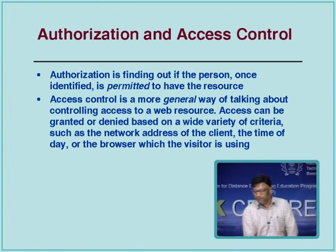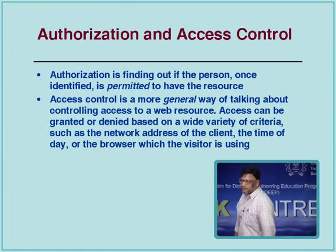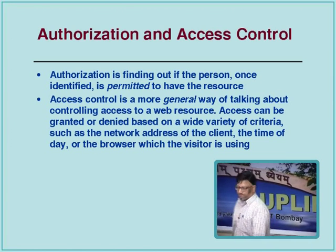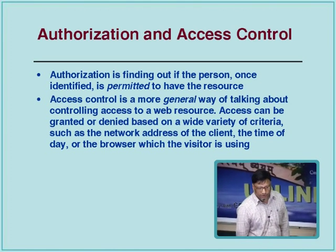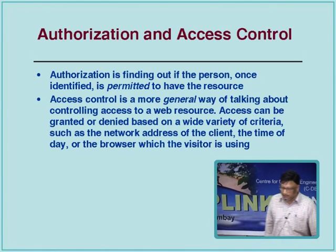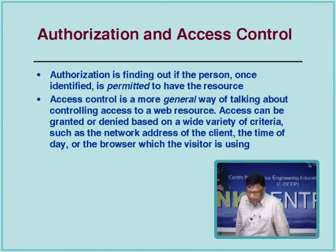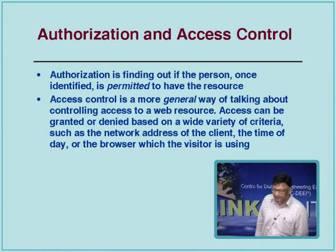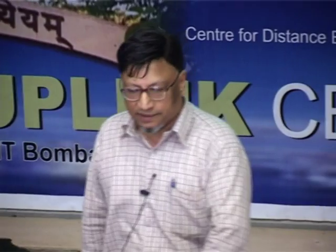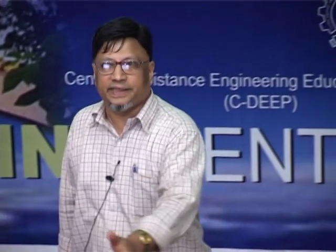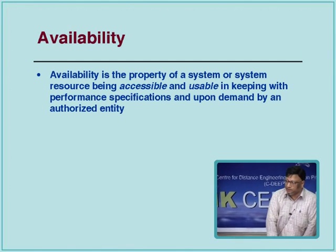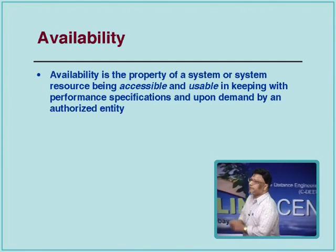Authorization determines that a person, once identified, is permitted to have or access a resource. Access control is more general — it controls access to a web resource not just based on identity but also on criteria such as network address, time of day, or the browser being used. Availability is the property of a system or system resource being accessible and usable upon demand by an authorized entity.